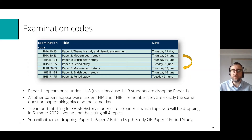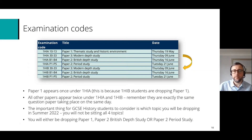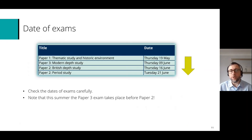The important thing for GCSE History students to consider is which topic you'll be dropping this summer, because you won't be sitting all four topics. You'll either be dropping paper 1, paper 2 the British Depth Study, or paper 2 the Period Study. You also need to check the dates of the exams carefully and note that paper 3 will take place before paper 2 this summer.